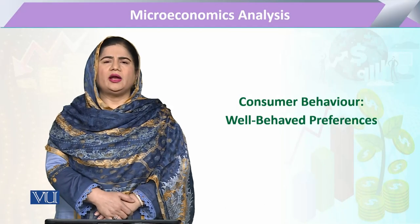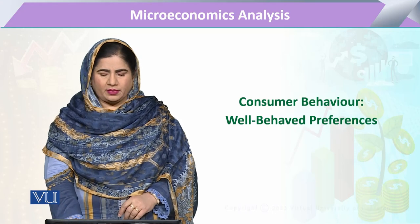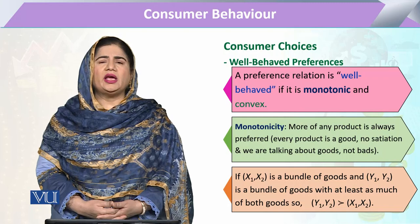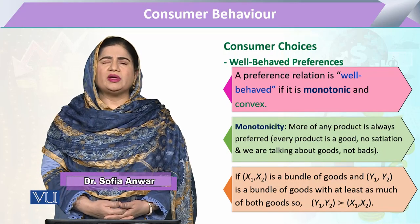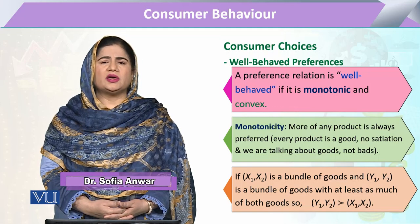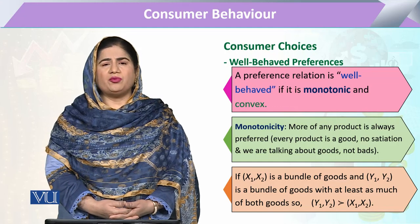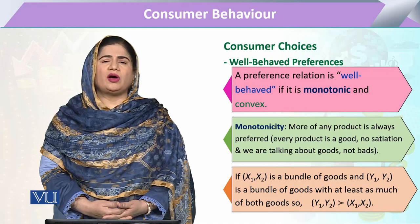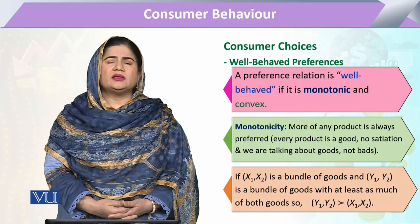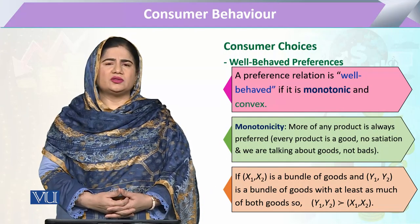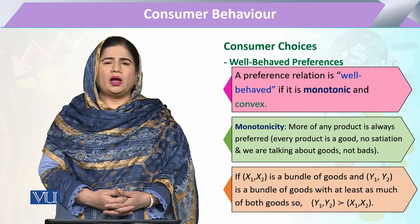In consumer behavior, the topic we are going to study is well-behaved preferences. What do we mean by well-behaved preferences? This is the basic assumption under the topic of the indifference curve — that when a consumer has well-behaved preferences, the indifference curve will follow the proper shape or axiom. There are three different factors which are required to be followed by the indifference curve.